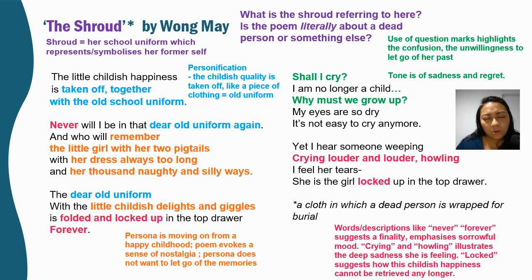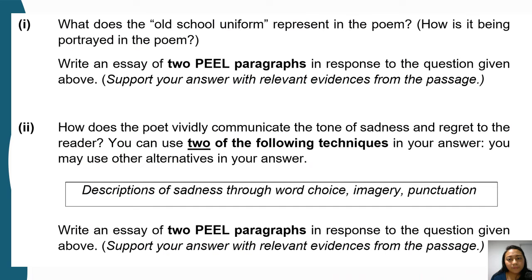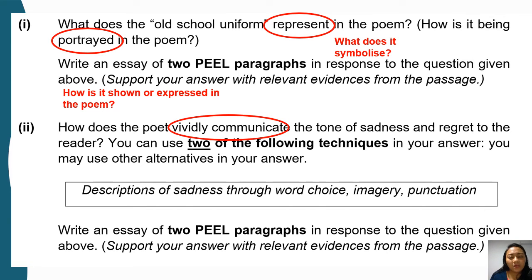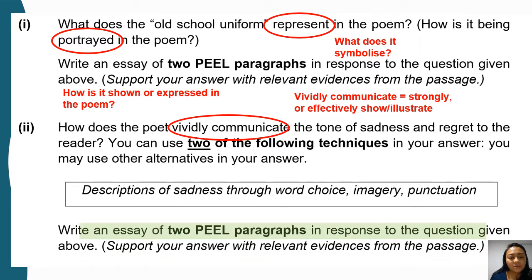These are the questions presented to you. When we see the word 'represent' in a question, it's asking what does it symbolize — so what does the old uniform symbolize here? When we see the word 'portrayed,' it means how is it shown or expressed in the poem? How does the poet vividly communicate the tone of sadness? 'Vividly communicate' means strongly or effectively show or illustrate — and we see this in these literary techniques.